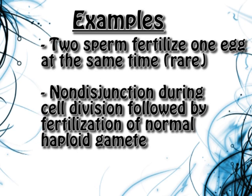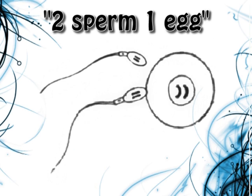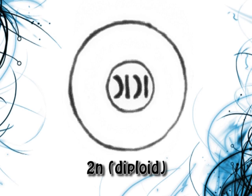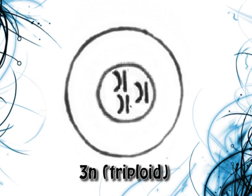Let's go into examples. One would be where two sperm fertilize one egg at the same time, and the other would be non-disjunction during cell division, followed by fertilization of a normal haploid gamete. In the example of two sperm and one egg, when you think of normal fertilization, you have one sperm fertilizing one egg, which results in a diploid zygote. However, in this case you have three sets of chromosomes — one from the egg and two from the sperm — resulting in a triploid, which is your example of autopolyploidy.